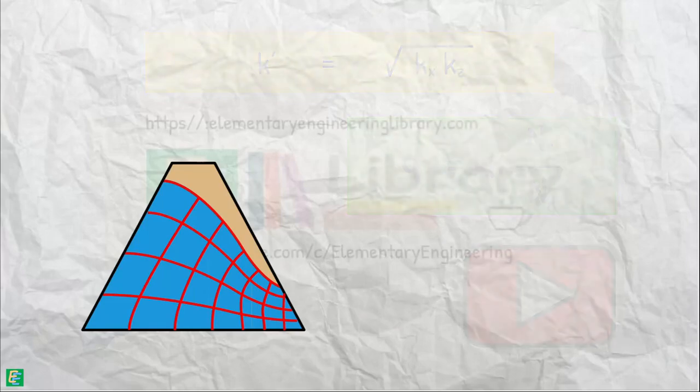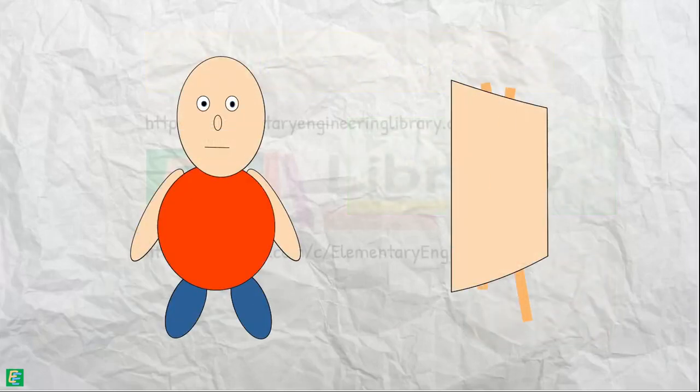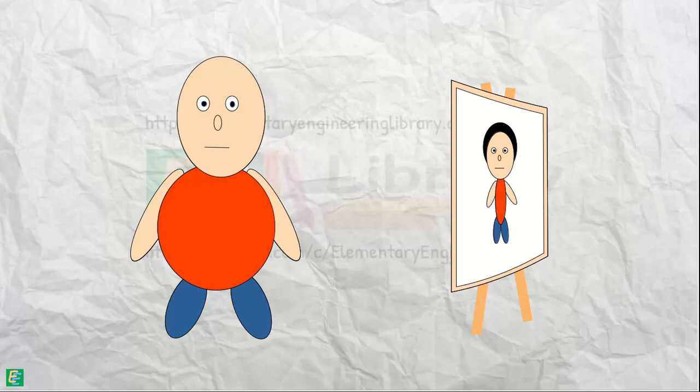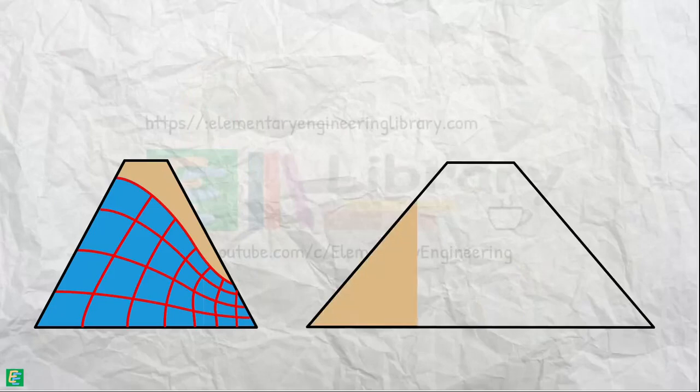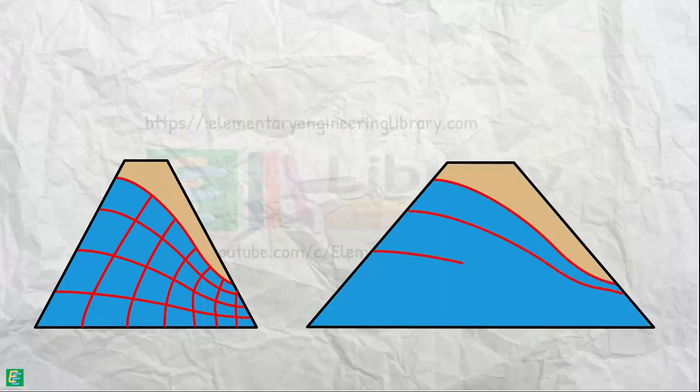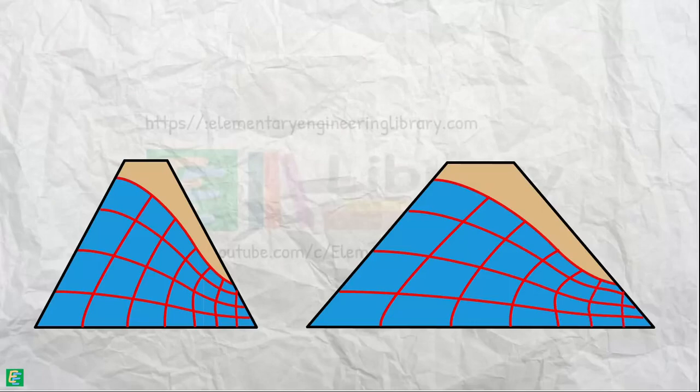Though the flow net on the transformed section does not present the correct picture of flow pattern, the true flow net can be drawn by re-transforming the section back to its original dimensions.